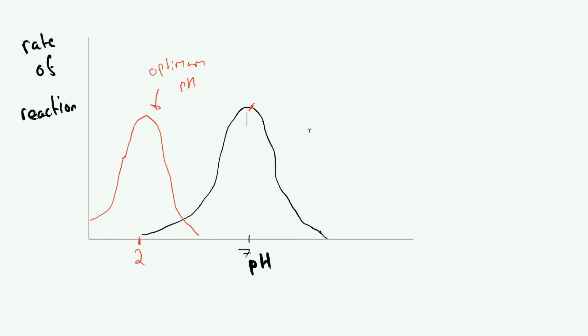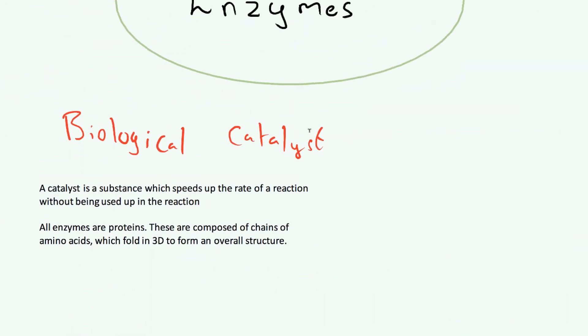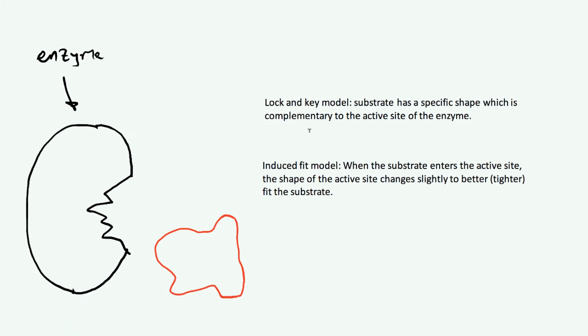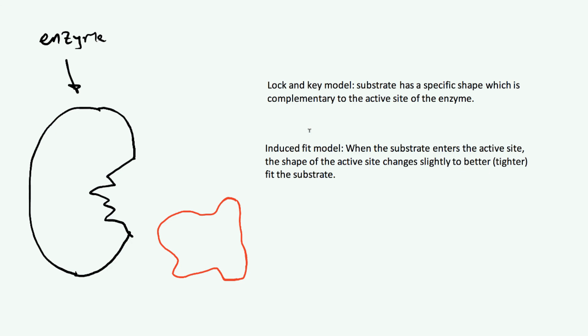In summary: an enzyme is a biological catalyst. The induced fit model describes how they really work — a substrate comes in, the enzyme changes shape to fit around it, and the reaction occurs. The rate of an enzyme-controlled reaction is affected by temperature and pH, and that varies between enzymes. When an enzyme is denatured, the rate completely drops because the active site has changed shape and the substrate can no longer fit. Please like and subscribe, and thank you very much for watching.